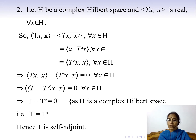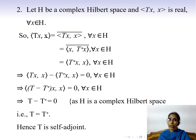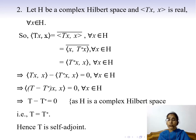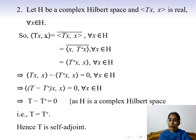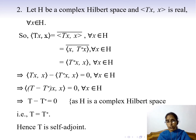We proved in the last lecture that if H is a complex Hilbert space and ⟨Qx, x⟩ = 0 for every x in H, then Q = 0. Applying this, T − T* = 0, which implies T = T*. Hence T is self-adjoint.